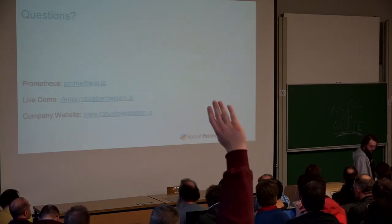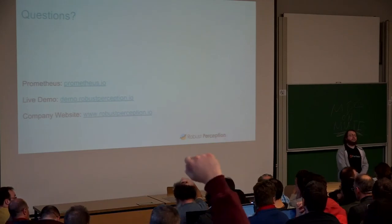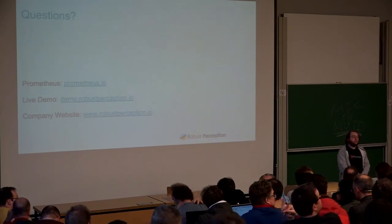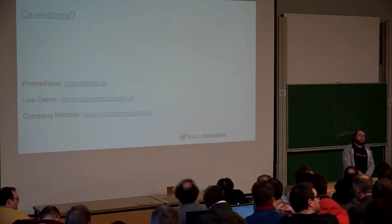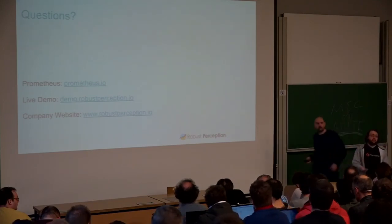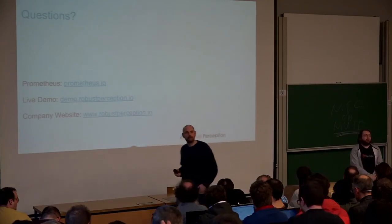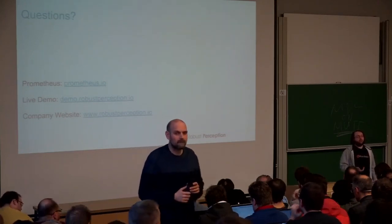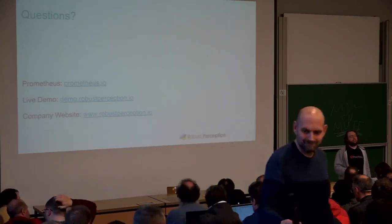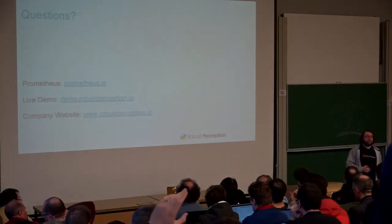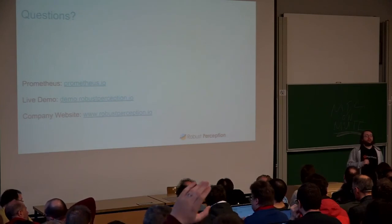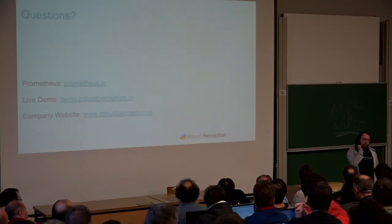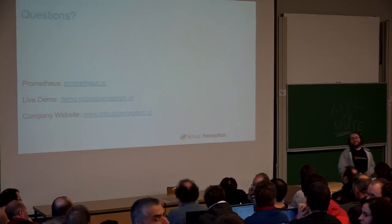Q: You said Prometheus uses compactions — wouldn't that imply write amplification? How do you avoid that? A: You're right, it's not as bad as previously — it would normally only write data two or three times rather than ten times in total. More detailed questions are better directed to Fabian. Q: Who would play him in the film? A: I don't know — if you grew your hair out, you might be able to do mine.